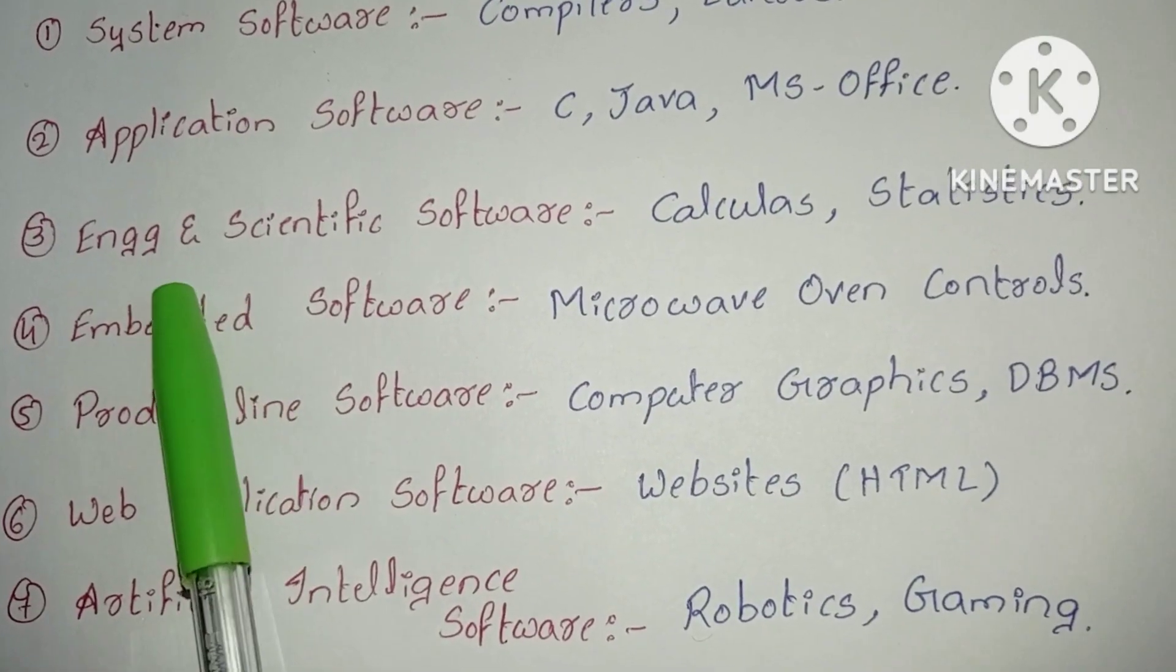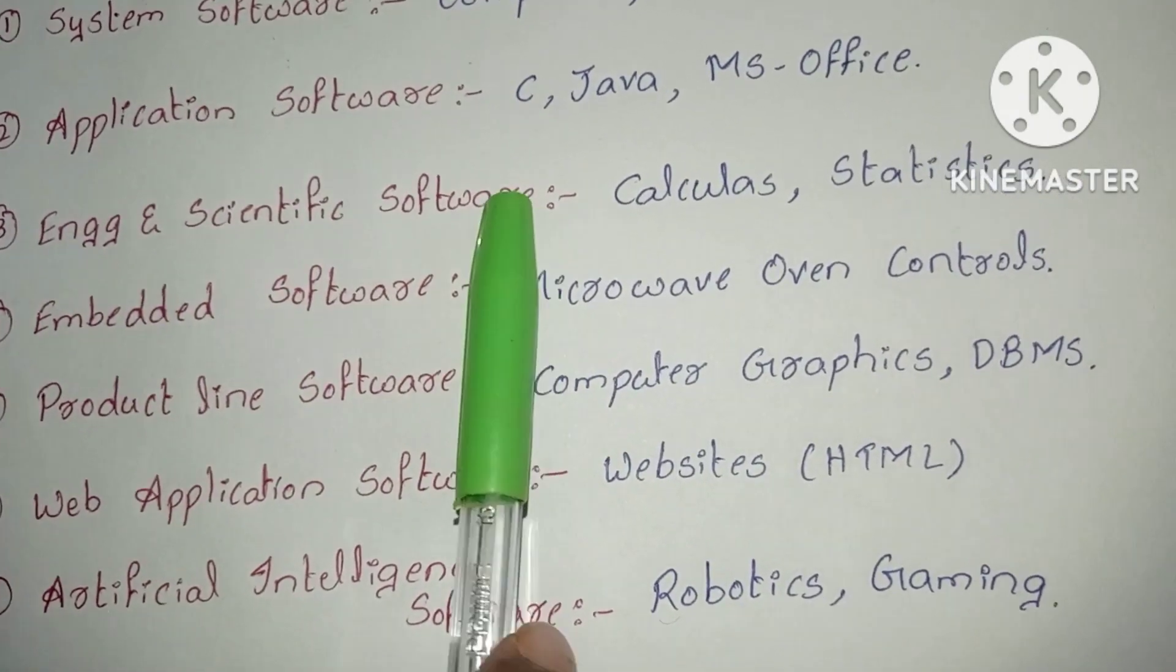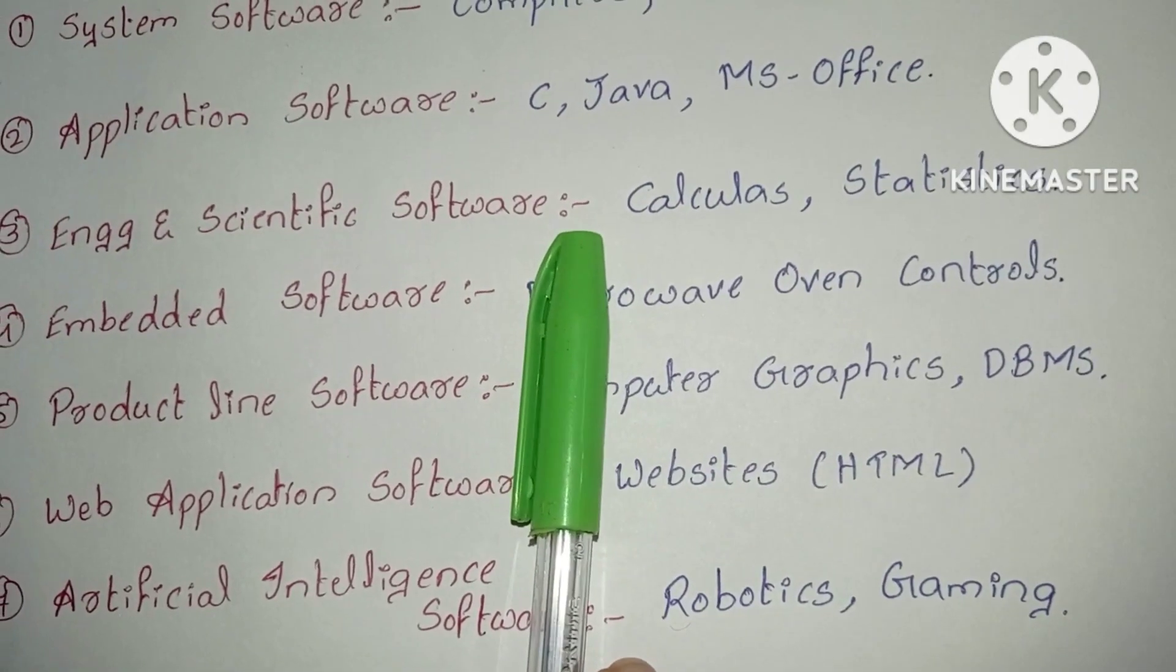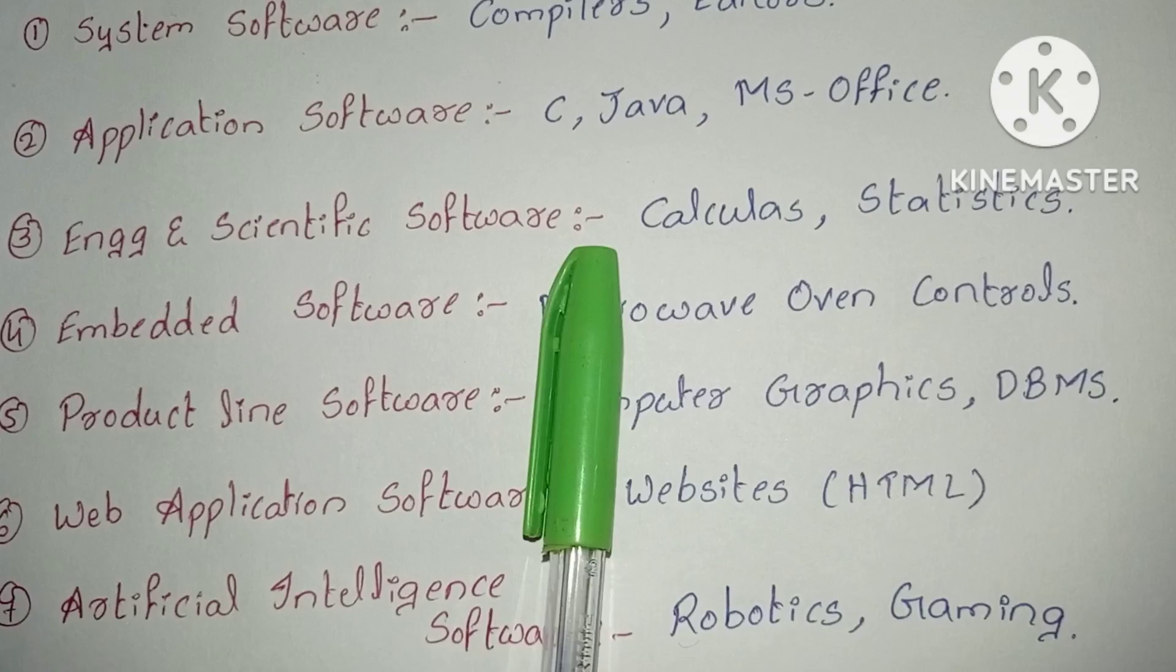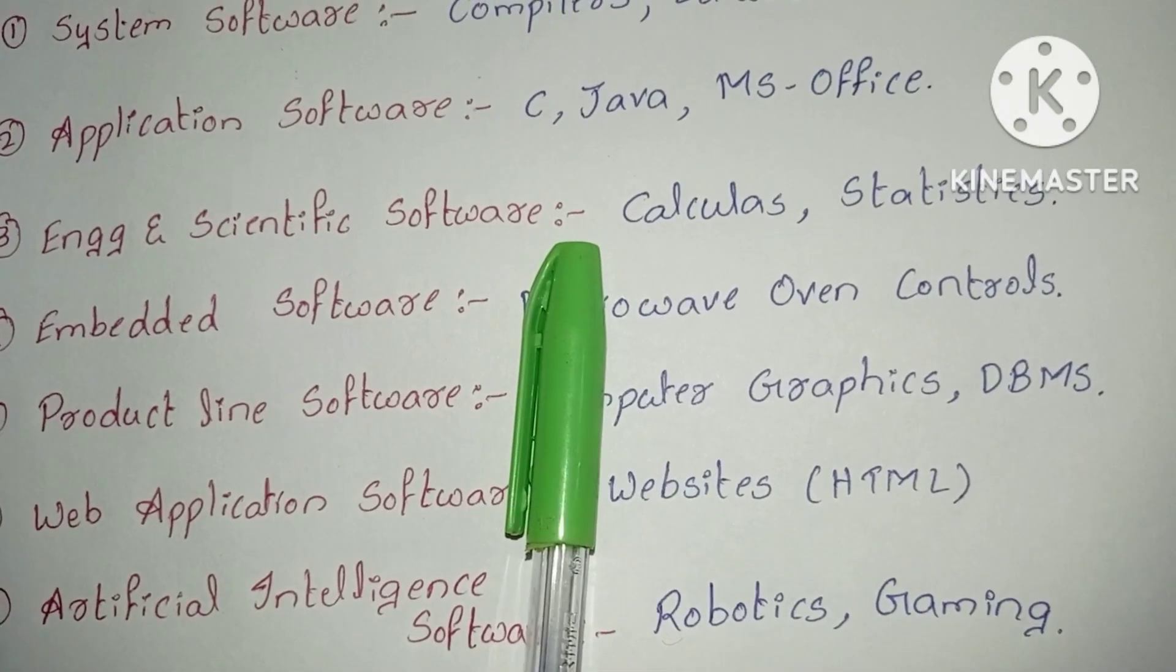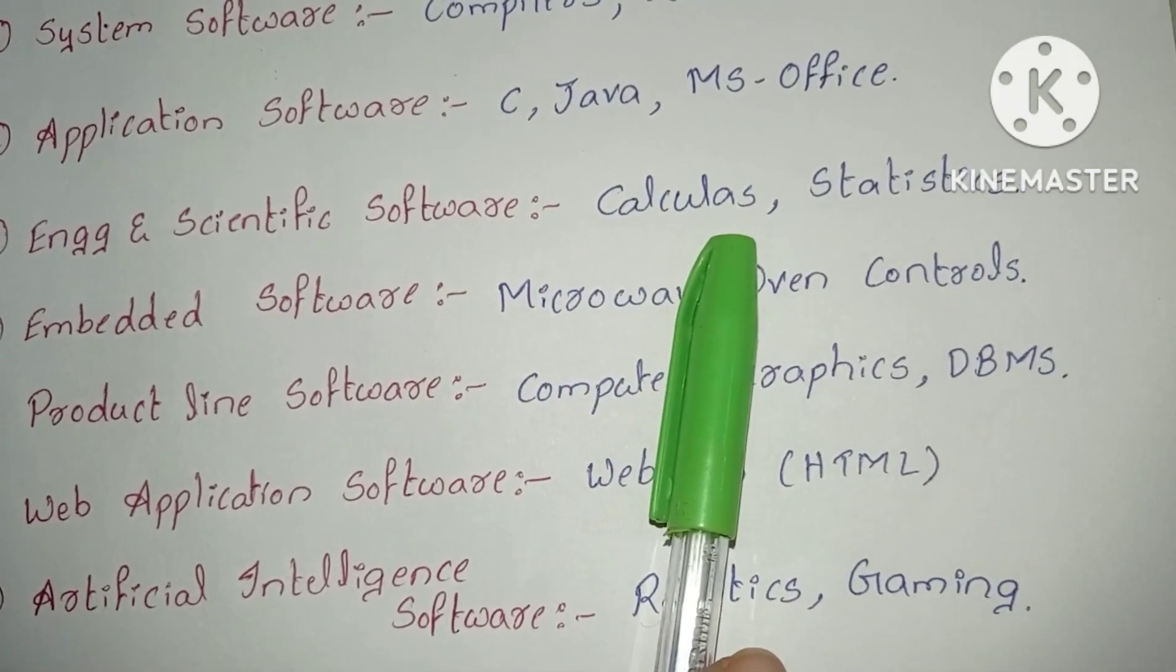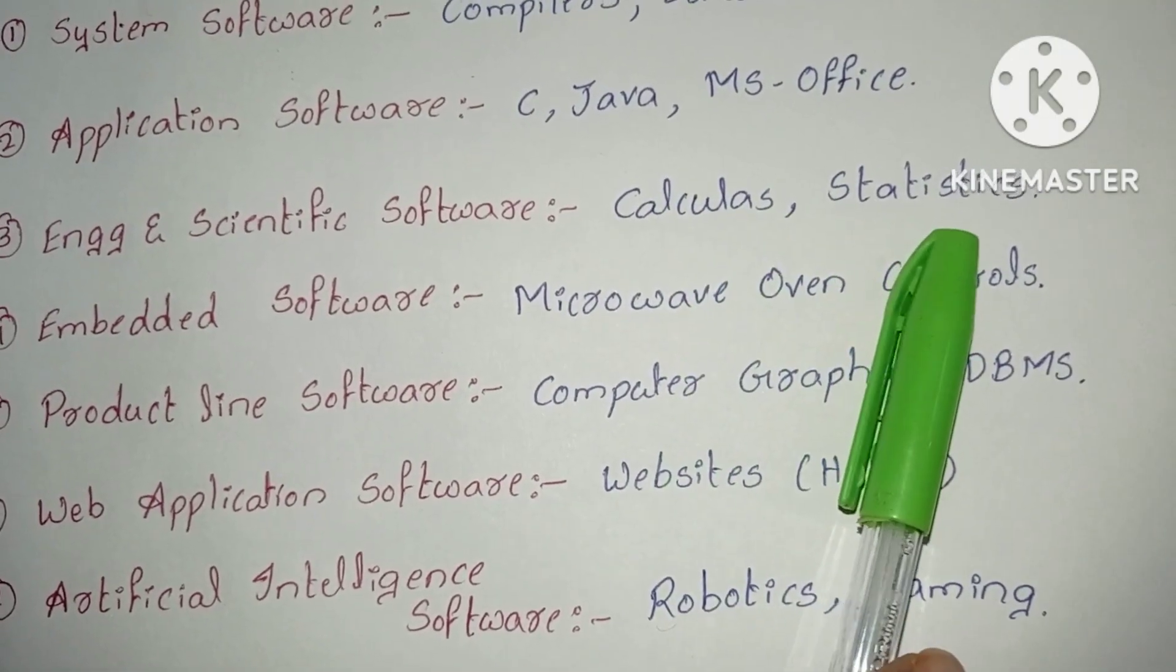Third is engineering and scientific software. It is used for complicating numeric calculations. If we have any complicating numeric calculations, we use engineering and scientific software. Examples are calculus and statistics.